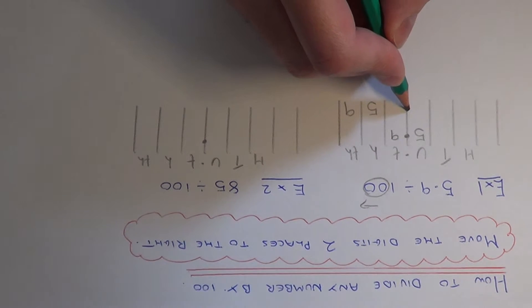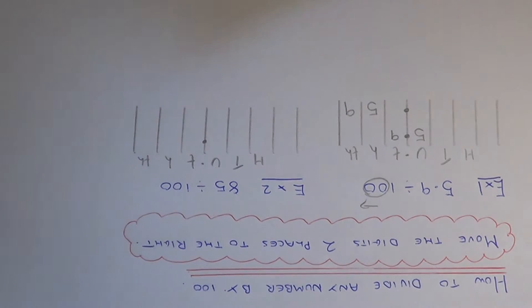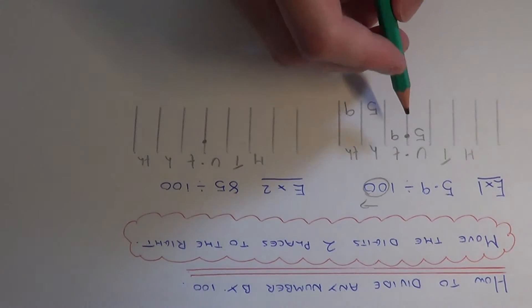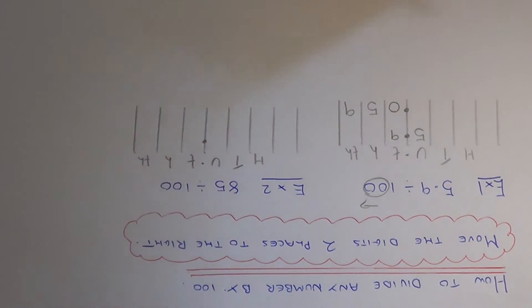The decimal point won't move. You need to fill in the gaps between the decimal point and your numbers with a 0. That's just one gap to fill in. So our final answer is 0.059.